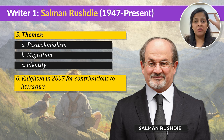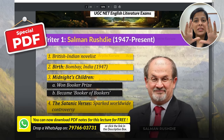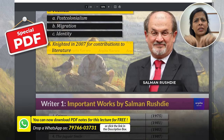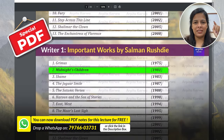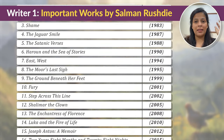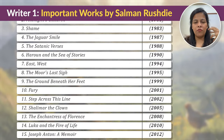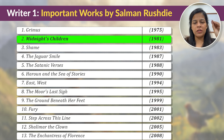Now, before we move on, let me tell you that I've created a special PDF that summarizes this entire video and provides you with exam-ready notes. You just have to message on the WhatsApp number on your screen, or click the WhatsApp link in the description box, and I'll send the handy PDF right to your phone. Now let's quickly glance over the chronological list of works by Salman Rushdie — you can see the exhaustive list on your screen. Out of this, Midnight's Children and Satanic Verses are very, very important, and I'm going to discuss Midnight's Children in a little more detail.